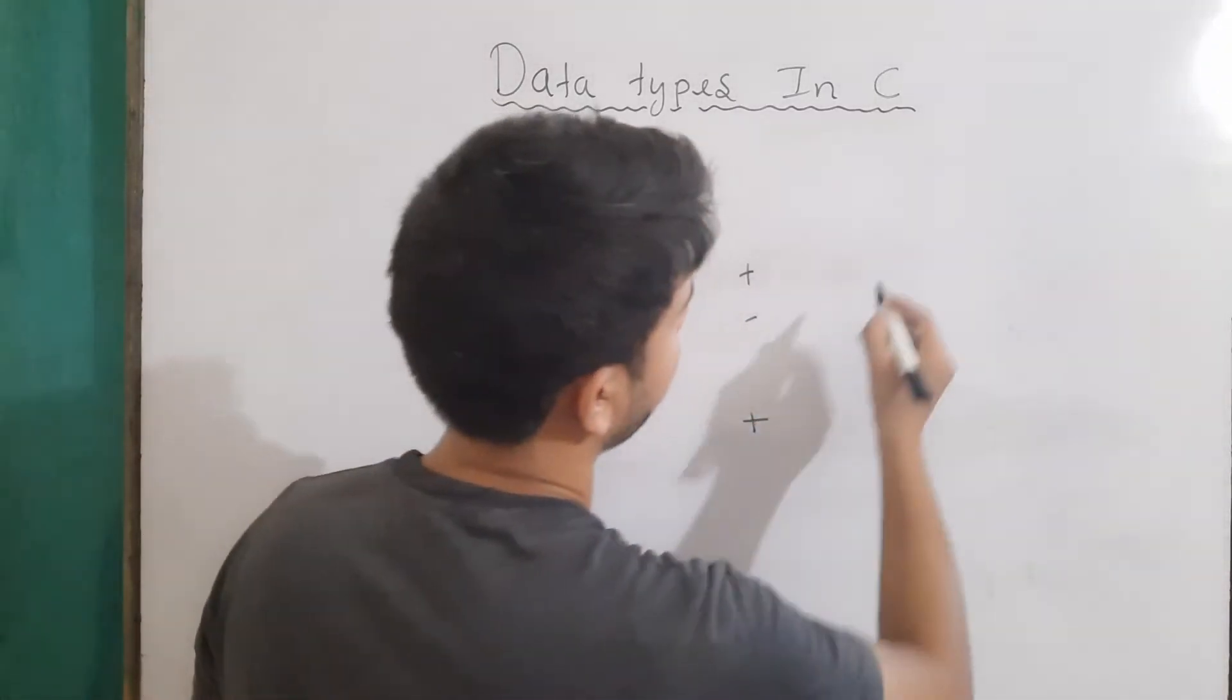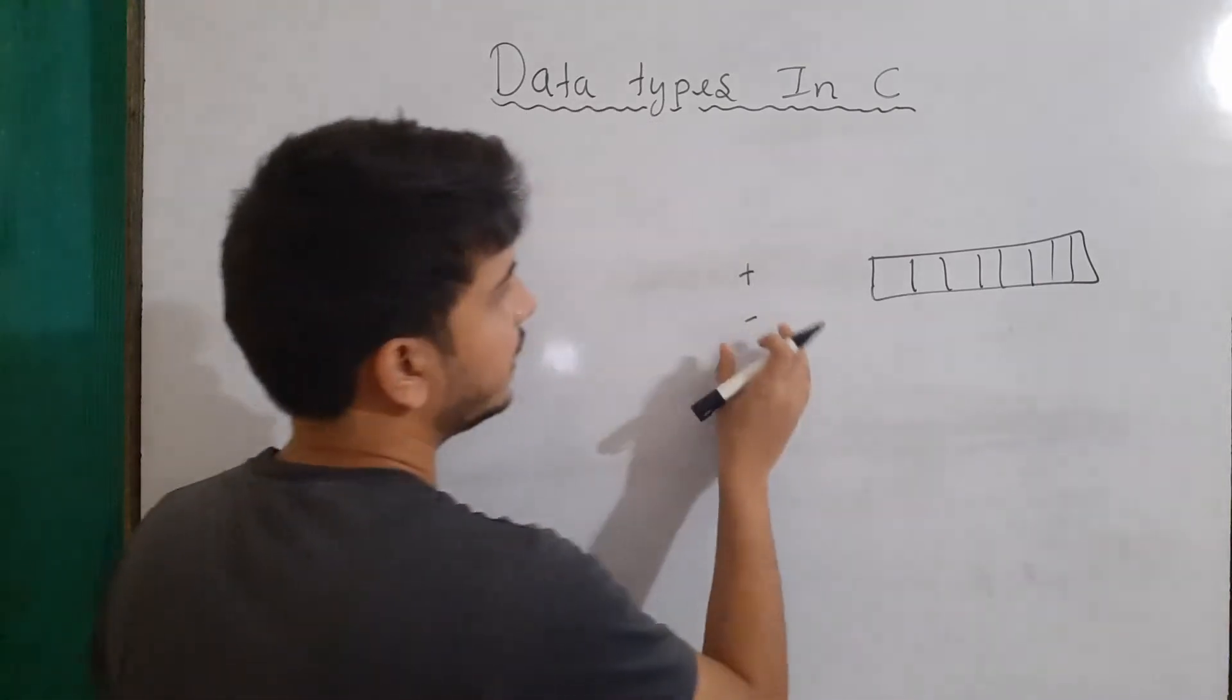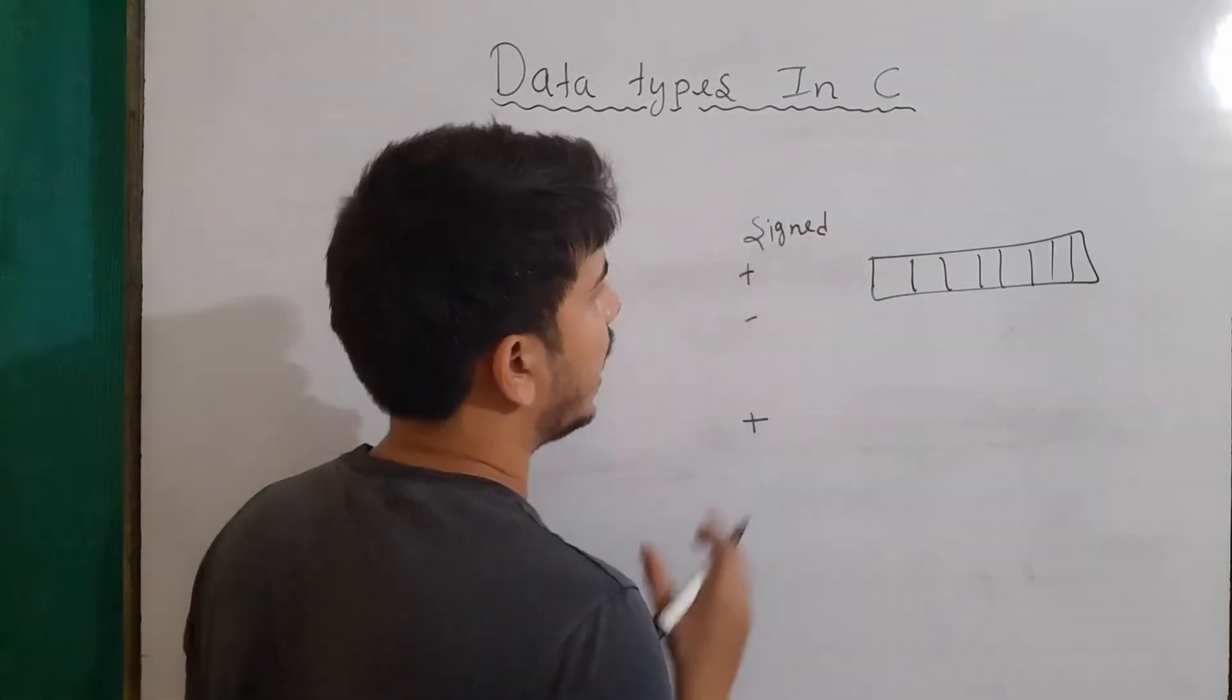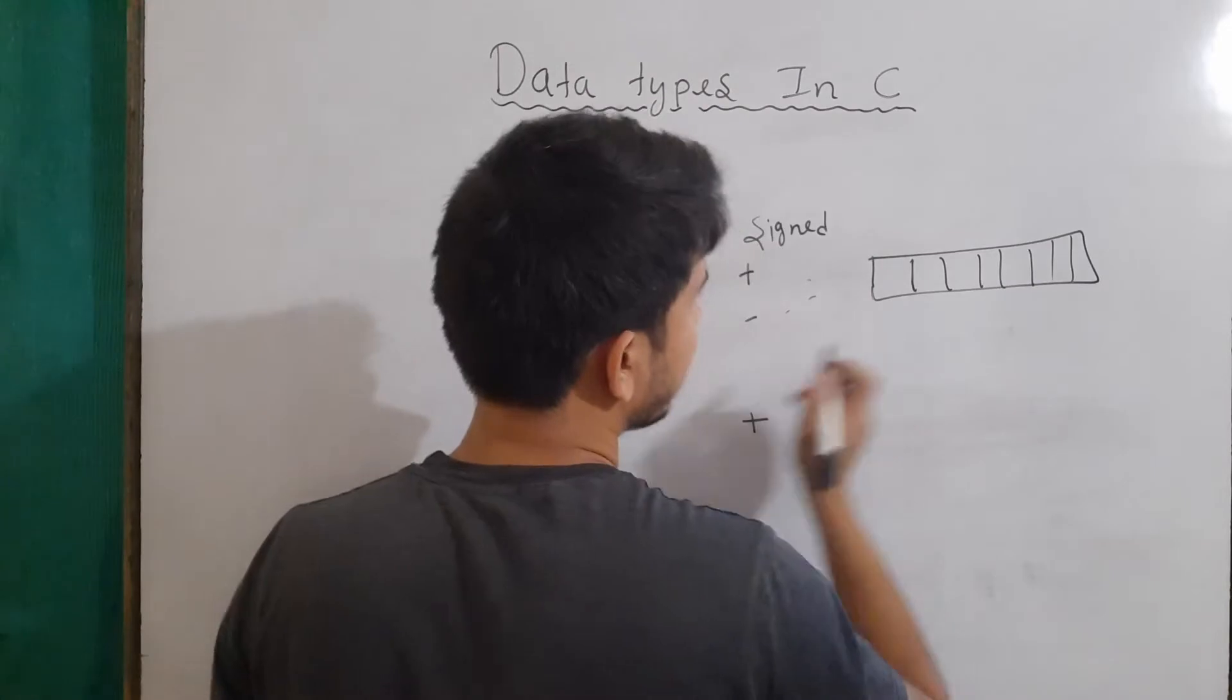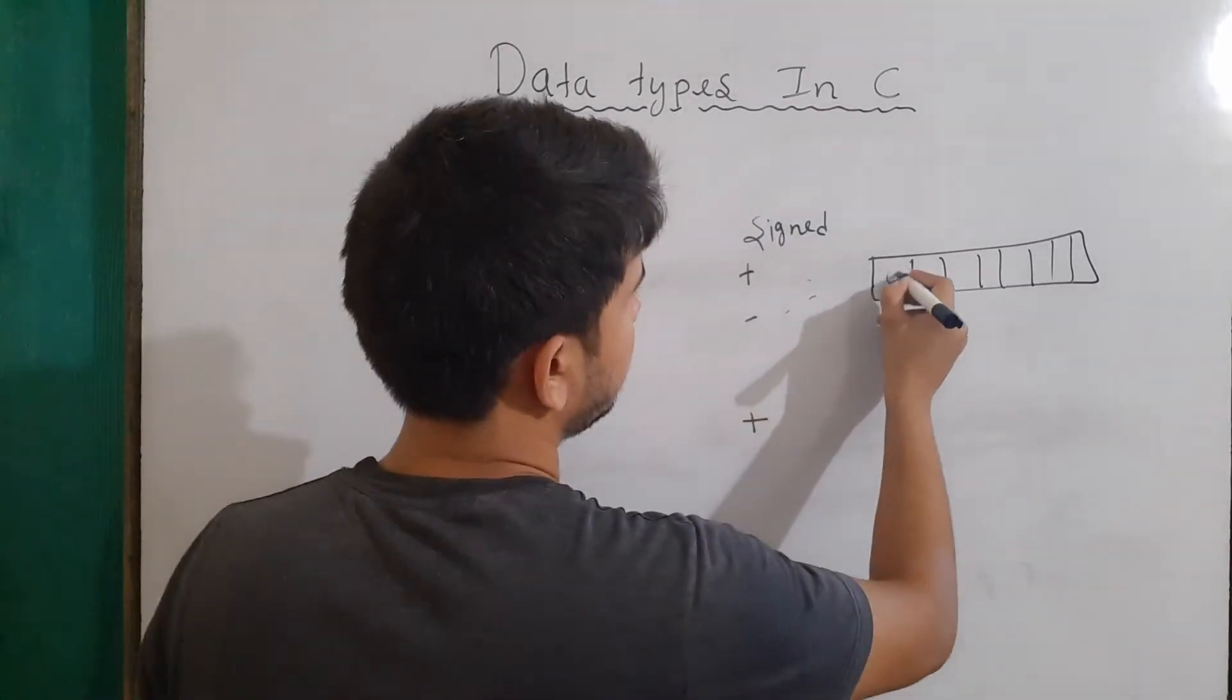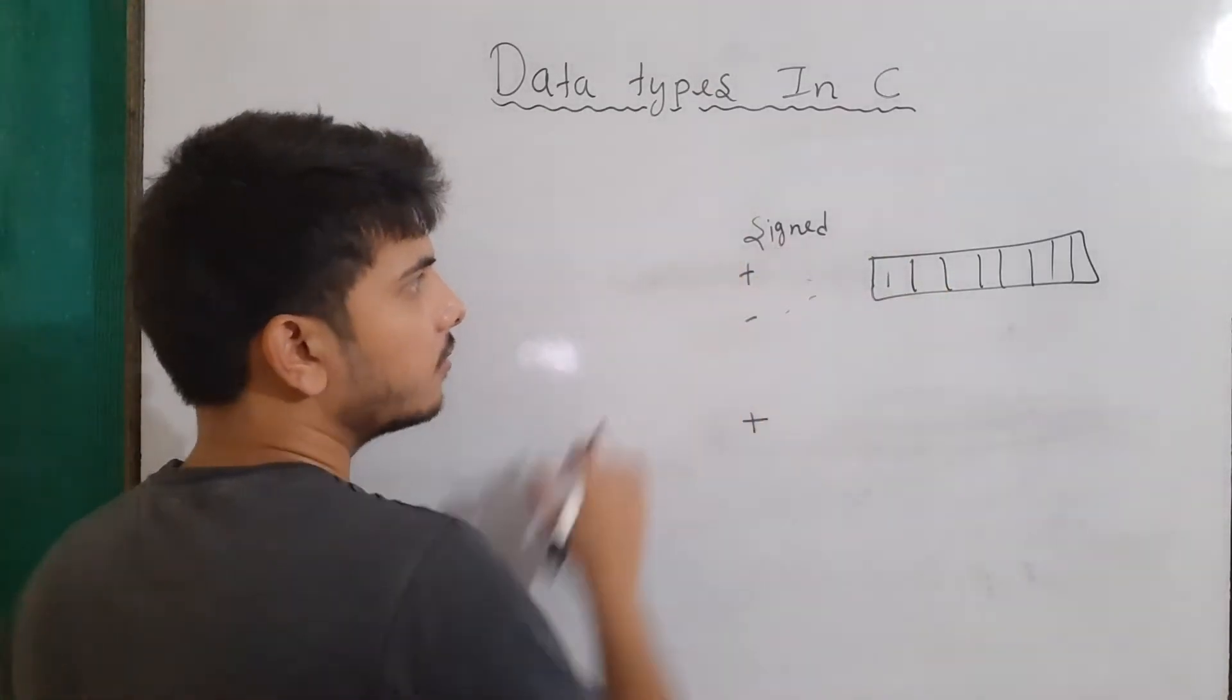For example, if there are 8 bits: 1, 2, 3, 4, 5, 6, 7, and 8, then in the case of signed numbers, a bit will be used for telling whether the number is positive or negative. The most left-hand side bit generally tells us this. For example, if this bit is 0, then the number will be positive, and if this bit is 1, then the number will be negative. This is in the case of signed numbers.